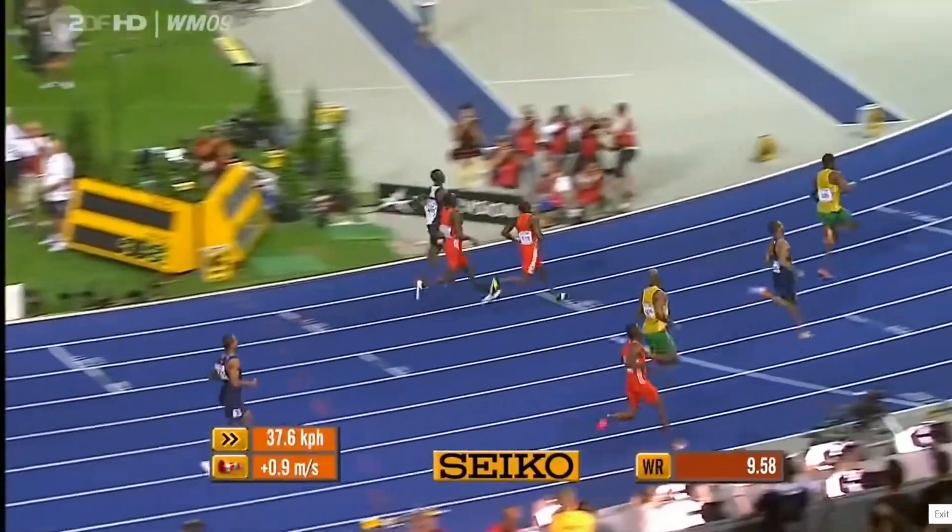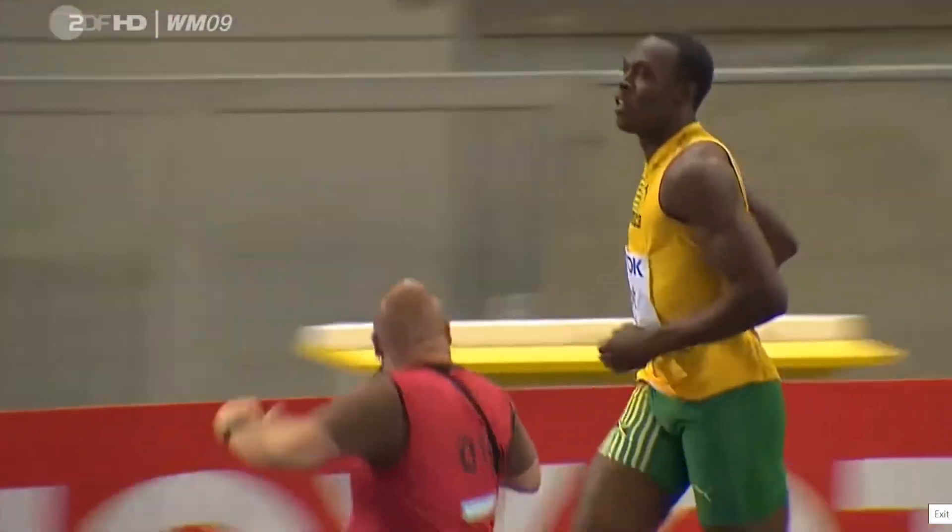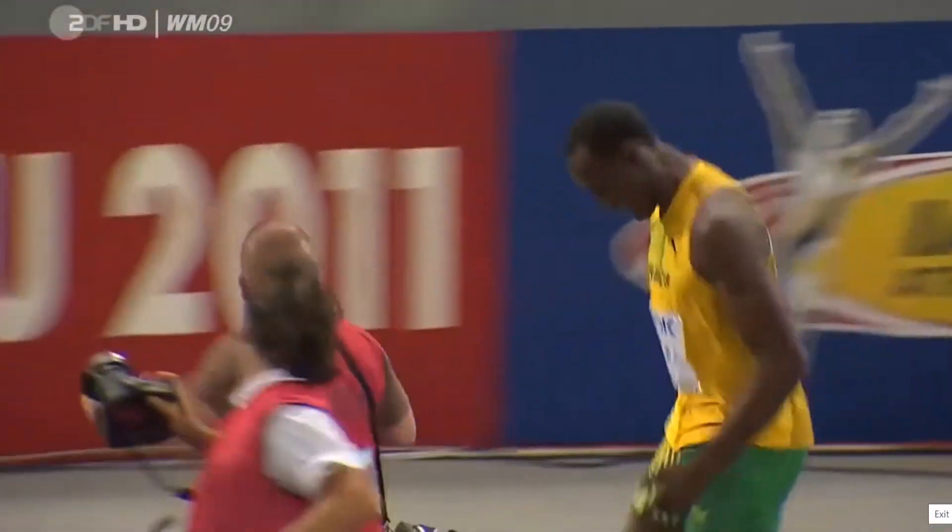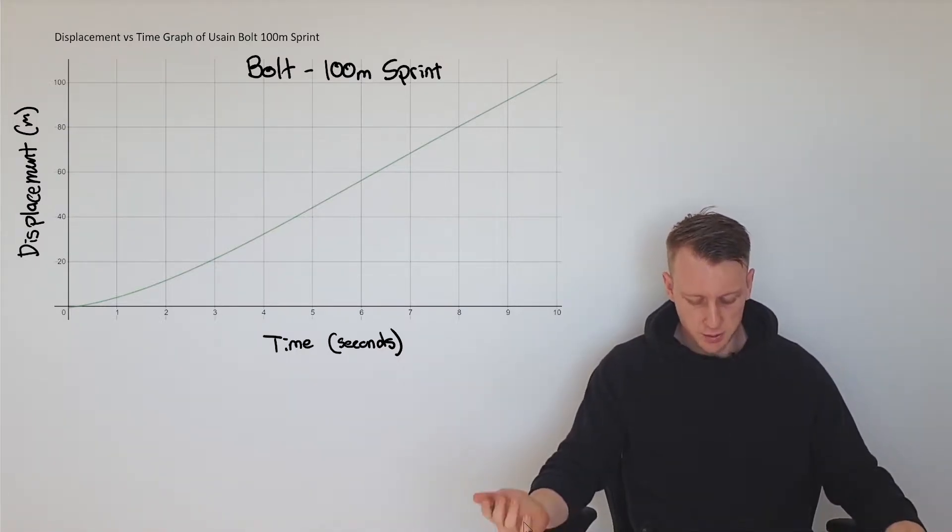To highlight this, we'll collect some data and I'll draw a line of best fit and put it onto a graph on Desmos. This displacement-time graph of Usain Bolt's 100 meter sprint, the y-axis is his displacement, where he is in a particular race, and the x-axis is the time in seconds.